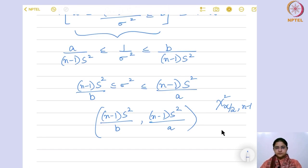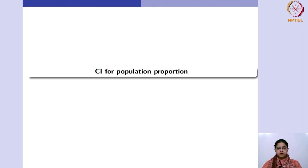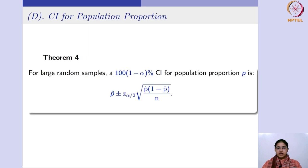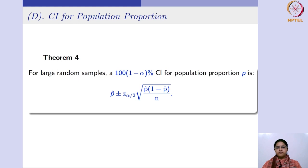Now moving to the confidence interval for population proportion. For large random samples, the 1 minus alpha, 100 percent confidence interval for population proportion is p hat plus or minus z alpha by 2 times the standard error, which is the square root of p hat times 1 minus p hat divided by n. This uses the fact that the binomial distribution can be approximated by the normal distribution, so z alpha by 2 comes into picture — concepts from sampling distributions that we studied earlier.